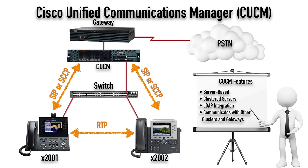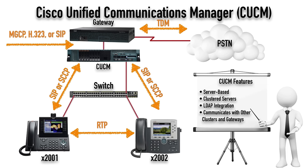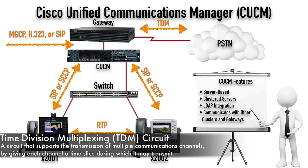We can communicate with a gateway to call out to the PSTN, the Public Switched Telephone Network. We can do that by going out to a gateway via the MGCP protocol, H.323, or the SIP protocol. That gateway might then send the call over some sort of time division multiplexing circuit, like an ISDN PRI circuit.